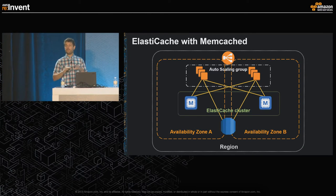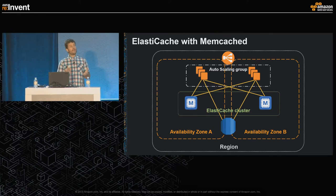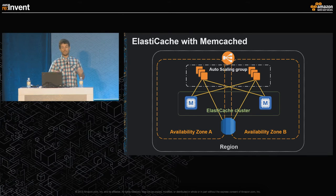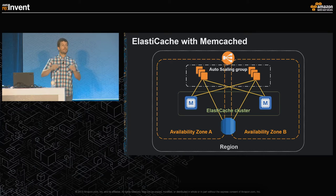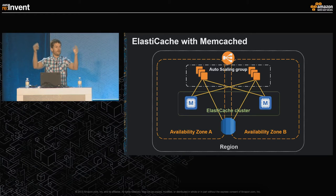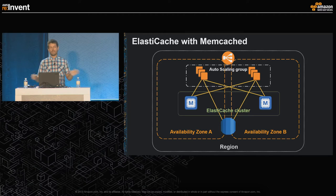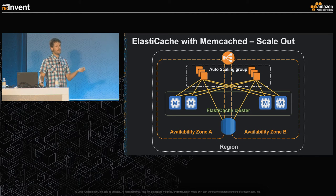Once you've scaled out your cluster to a few extra nodes, the advantage of Memcache is you can keep adding nodes and evenly distribute your data across all of them. In the simplest case, have all your application nodes connect to all the different cache nodes in a big mesh — very low maintenance, don't have to think about it. As you scale out and need more cache space, just continually add nodes.